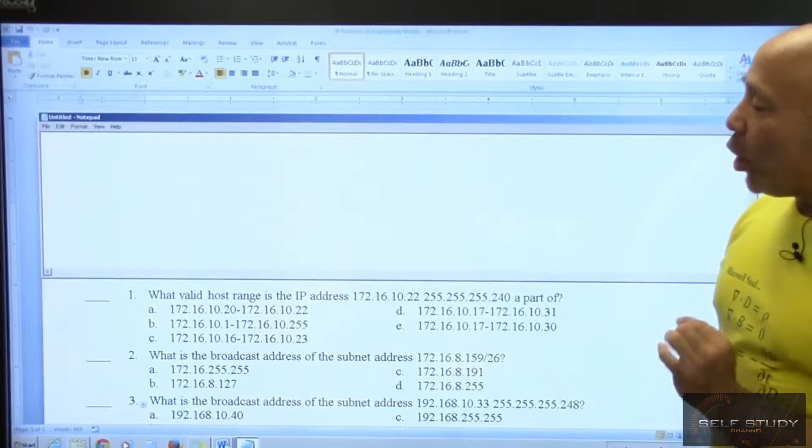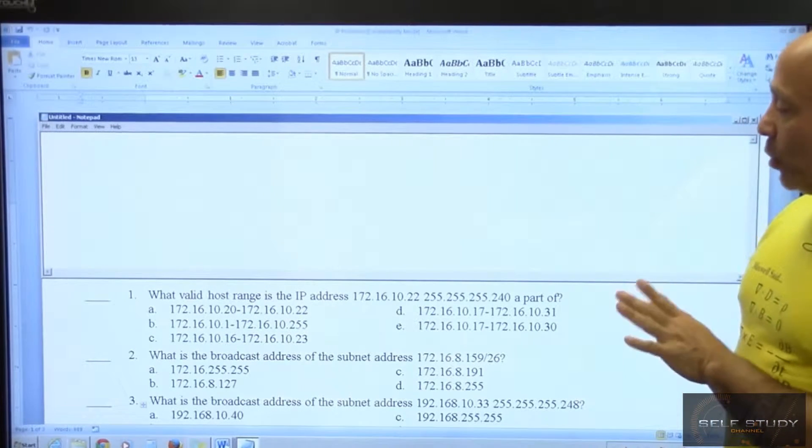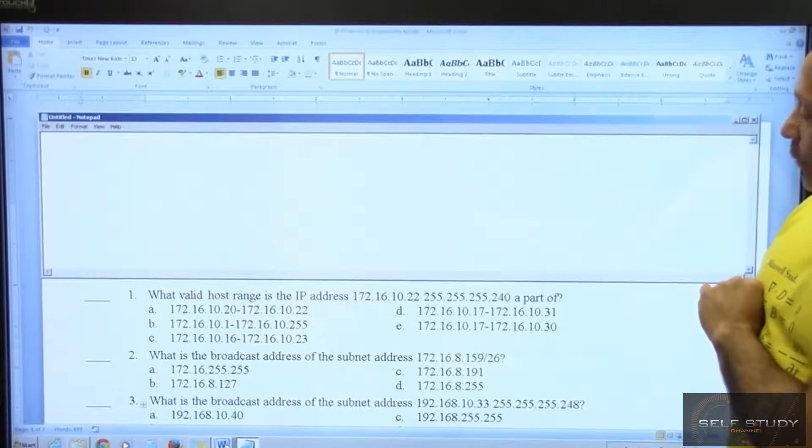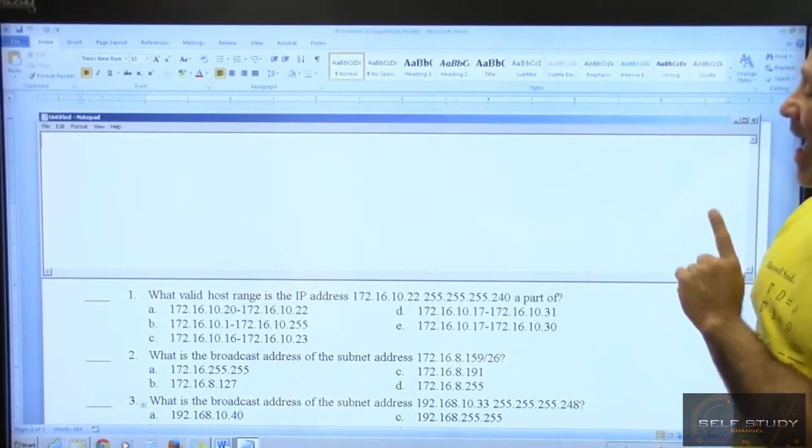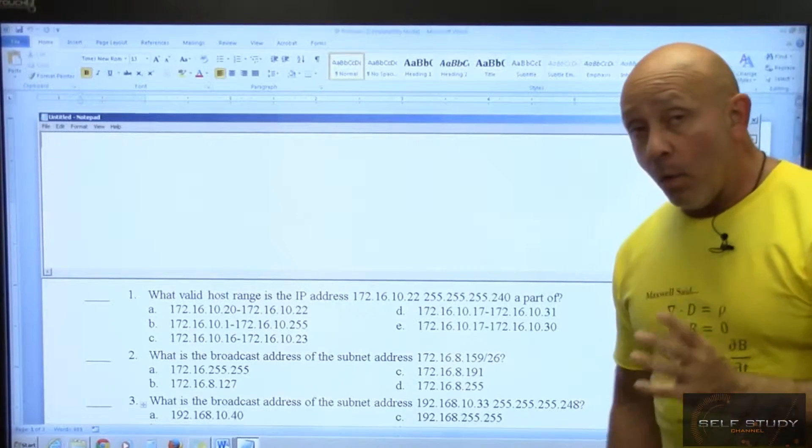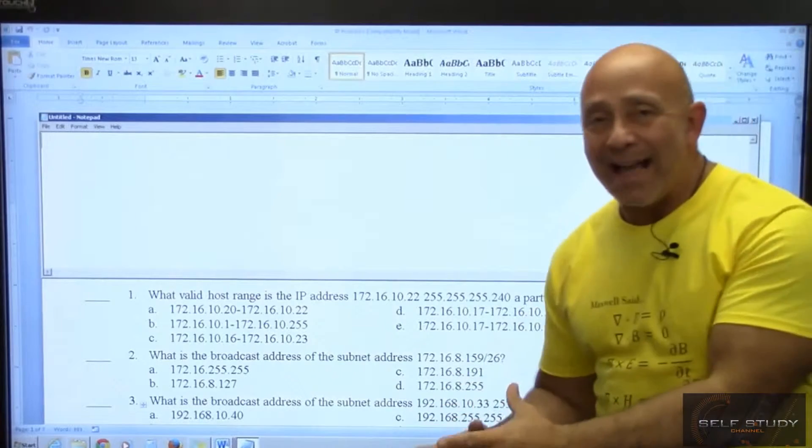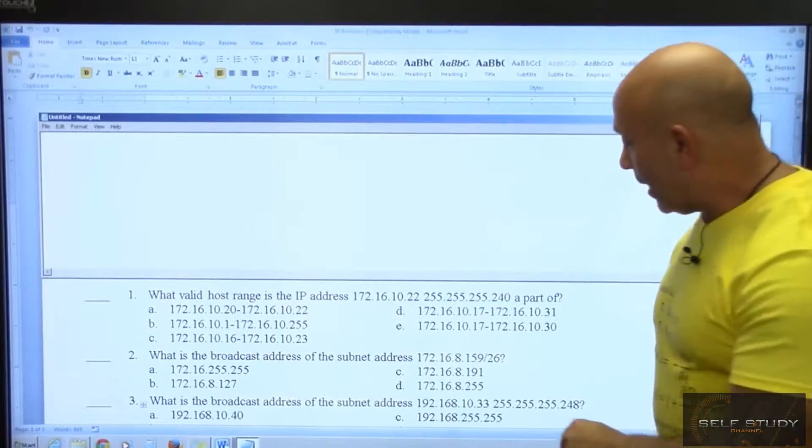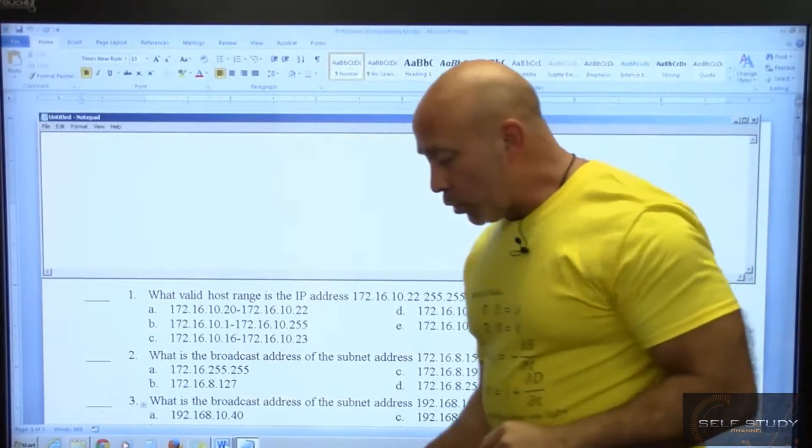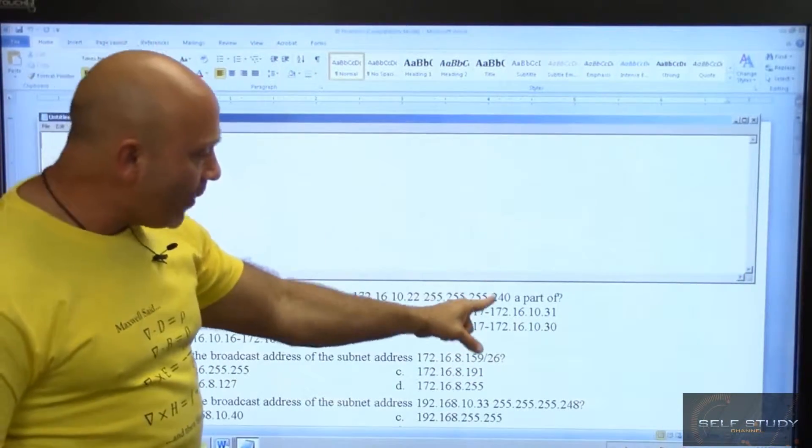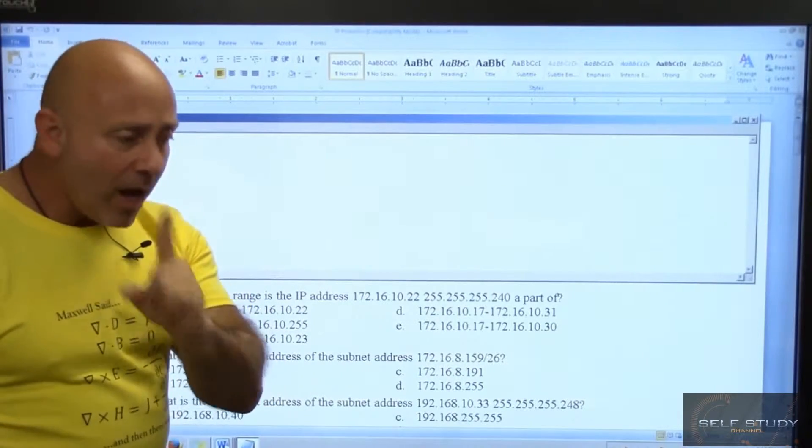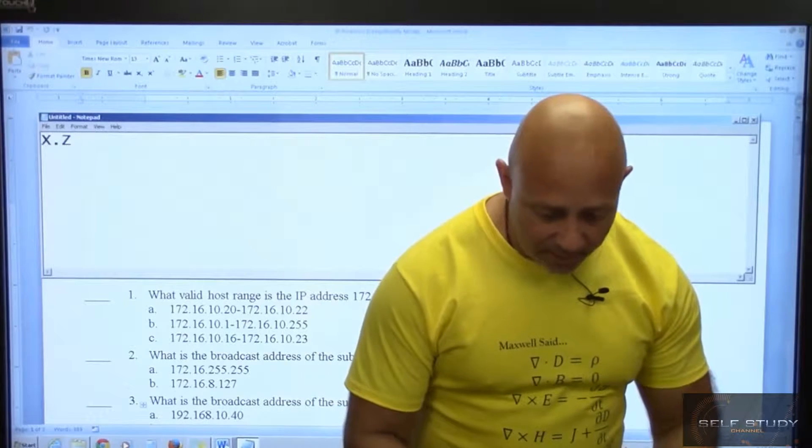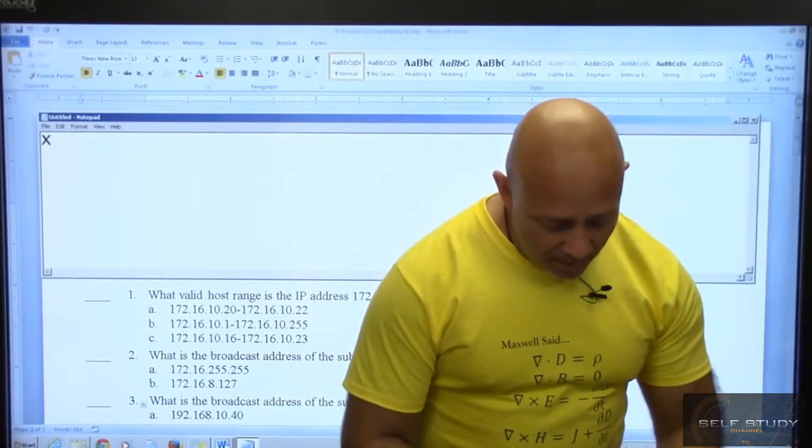Here it says: what valid host range is the IP address 172.16.10.22 with that particular mask 255.255.255.240 a part of? When I'm asked a question like this, how do you attack it? Well, you look at the subnet mask, the key. So it's 240, so I'm focused on the last octet. So let me draw my diagram: X.X.X.